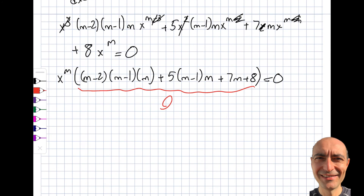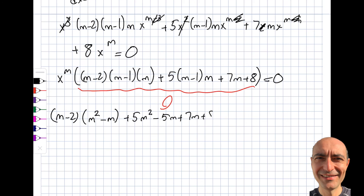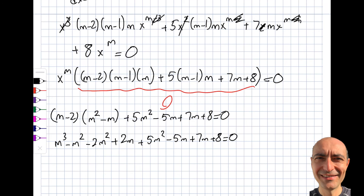Now I multiply things out. So m(m−1)(m−2): first I handle (m−1)(m−2) to get m²−m, right. Plus 5·m(m−1) gives 5m²−5m. Plus 7m plus 8 equals zero. Then expanding (m−2)(m²−m) gives m³−m²−2m²+2m. So I have m³−m²−2m²+2m plus 5m²−5m plus 7m plus 8 equals zero.